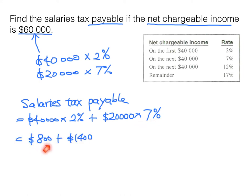This becomes $800 plus $1,400. And finally, the answer will be $2,200.